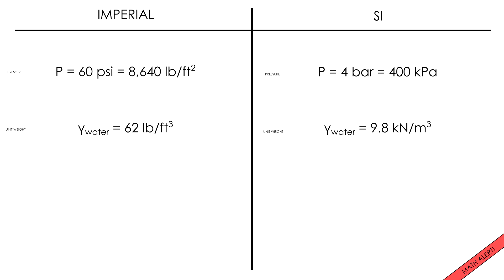The static head equivalent, in other words, the height of a column of water with that same amount of energy is just the pressure divided by the unit weight of water.